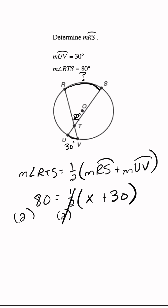And when I do that, I'll get 160 is equal to x plus 30. Then just subtract 30 from both sides to get x is equal to 130, and that would be our answer.